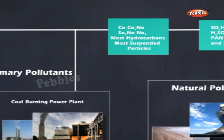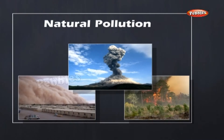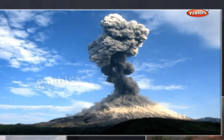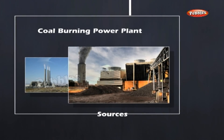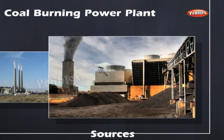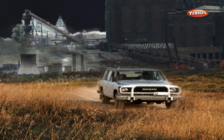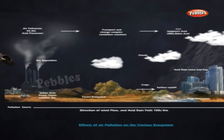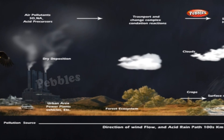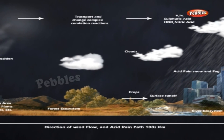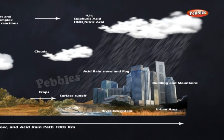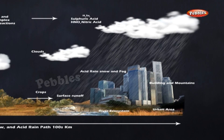Natural sources of air pollution include dust storms, forest fires, volcanoes, and pollen grains. Man-made sources include burning of fuels like wood, cow dung cakes, coal, and kerosene in homes. Exhaust gases emitted by motor vehicles pollute the air. Industries pollute air by releasing various types of pollutants. Nuclear power plants pollute air by releasing radioactive rays. Deforestation pollutes air by increasing the amount of carbon dioxide in it. Mining of coal releases coal dust into the air and pollutes it.